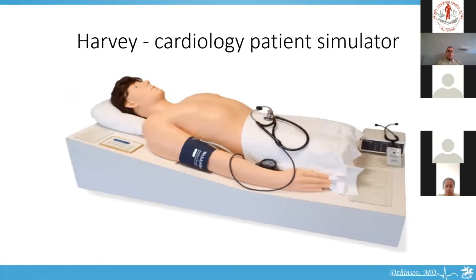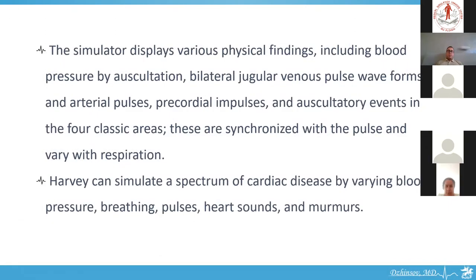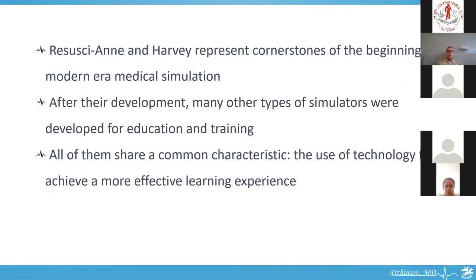This is Harvey, a cardiology patient simulator. It is a full-size mannequin that simulates 27 cardiac conditions, and it was first demonstrated in 1968 at the American Heart Association scientific session by Dr. Michael Gordon of the University of Miami. The simulator displays various physical findings including blood pressure, auscultation, bilateral jugular venous pulse waveforms, and arterial pulses. Precordial impulses and auscultatory events in the four classic areas are synchronized with the pulse and vary with respiration. Harvey can simulate a spectrum of cardiac disease by varying blood pressure, breathing, pulses, heart sounds, and murmurs.